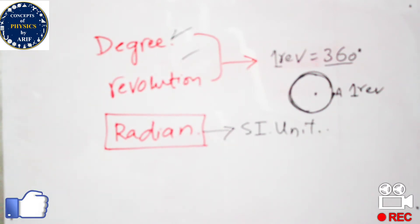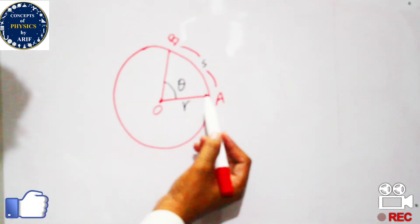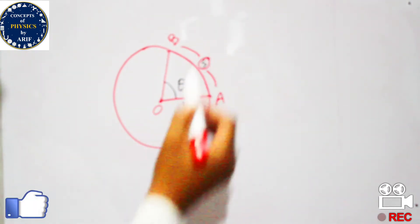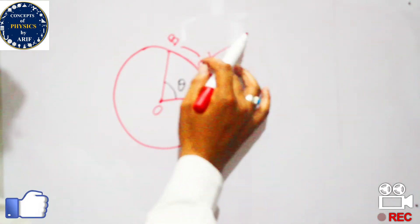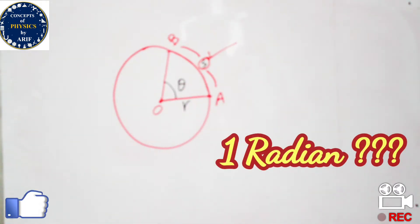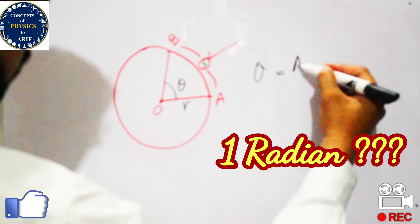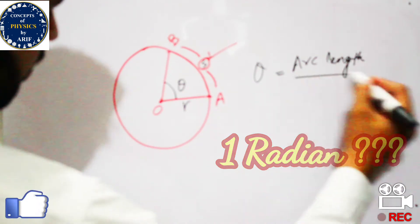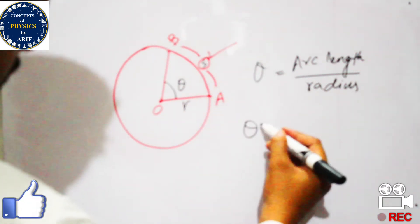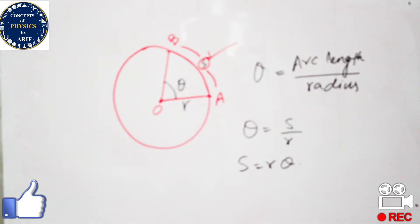Since radian is the SI unit, we need to define it using this diagram. The diagram shows that when a body moves from its initial point to its final point and covers an arc length S equal to the radius r of the circle, the angle formed is one radian. So, angular displacement theta equals arc length divided by radius: θ = S / r, or S = rθ.